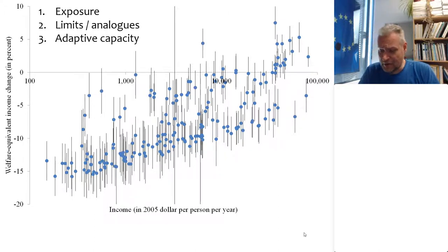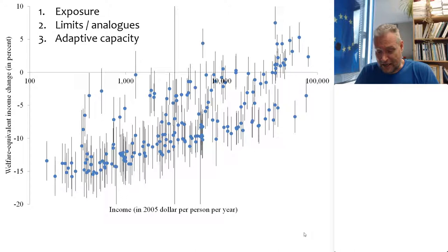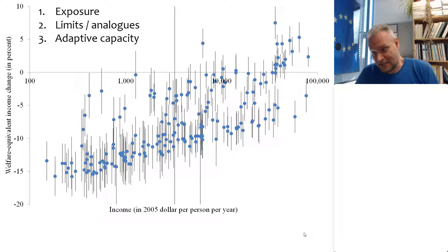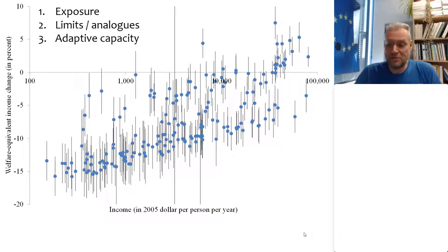This relationship between wealth and the impacts of climate change is systematic. This is not just a correlation — we actually believe this is a causal relationship. And there are three mechanisms that explain this.